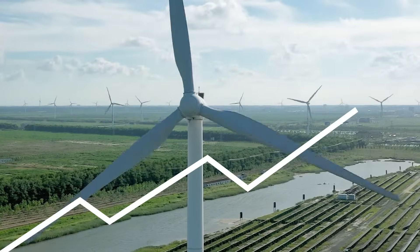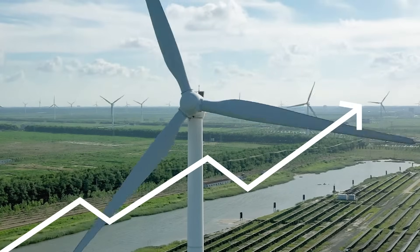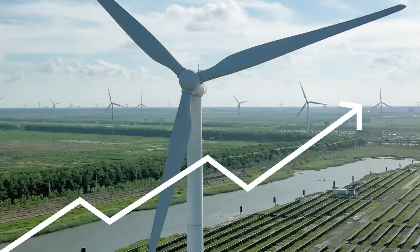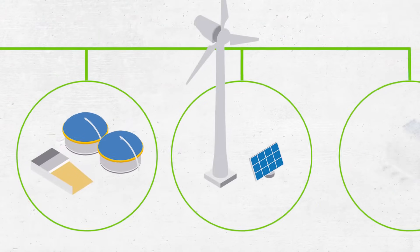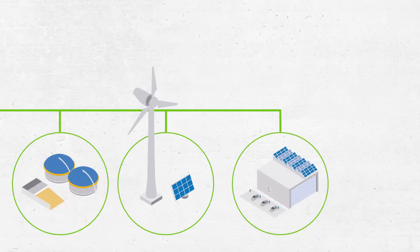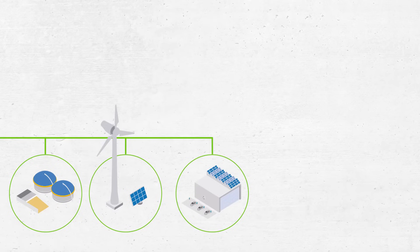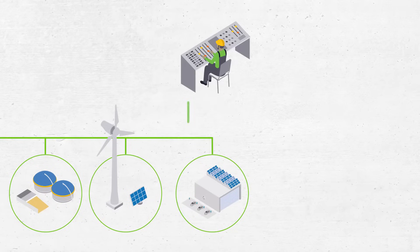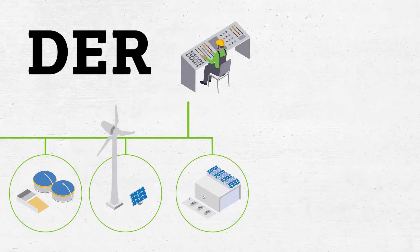As you know, the share of renewable energy has increased significantly in recent years, with these sources becoming more decentralized and adding larger amounts of energy to the grid. Therefore, to ensure that the grid is stable, there needs to be an information exchange between the grid operator and the distributed energy resource, often referred to as a DER.